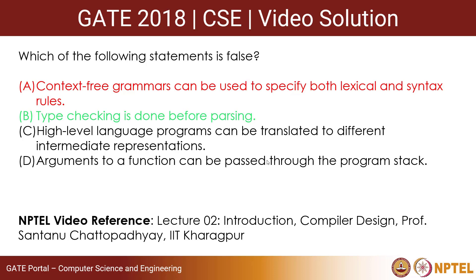For completeness, let us check the other two options. Option C says high level language programs can be translated to different intermediate representations — this is true, because once the semantically verified parse tree is generated, you can translate your program to any intermediate representation. Option D says arguments to a function can be passed to the program stack — this is also true, because when a function is called, an activation record is pushed into the stack, and that activation record contains the local variables and the arguments of the function.